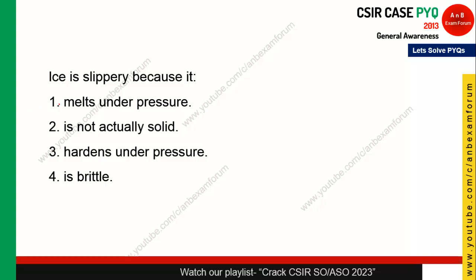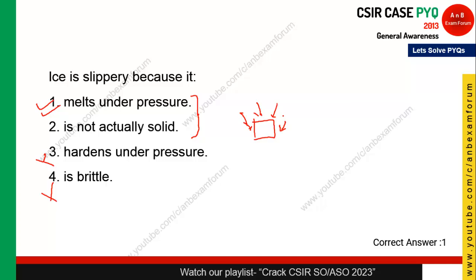This question is from science: ice is slippery because — options include it melts under pressure, hardens under pressure, or is brittle. Students can easily eliminate 'brittle' and 'hardens under pressure.' The correct answer is that ice melts under pressure. When there is atmospheric pressure on the ice cube, it melts, creating a thin layer of water, making it slippery. Option 1 is the correct answer.